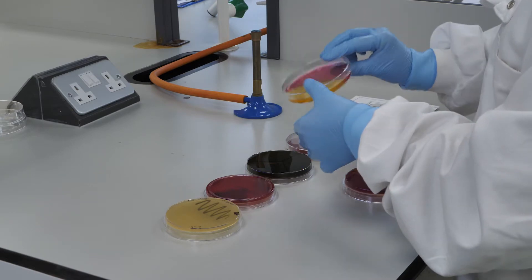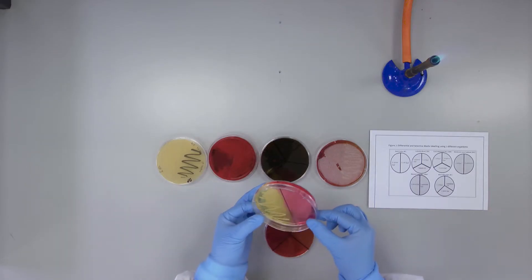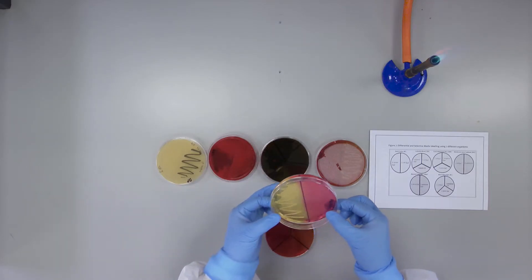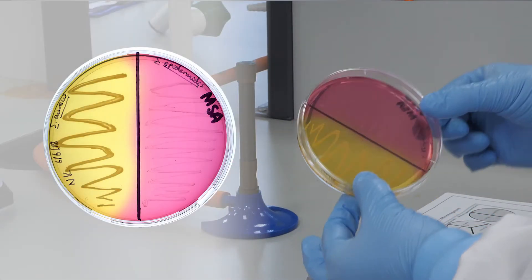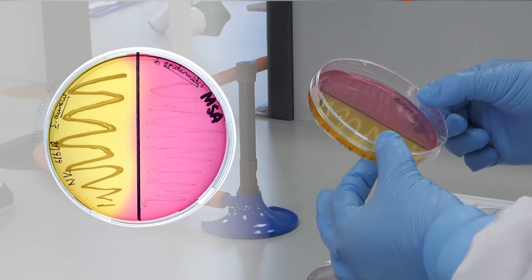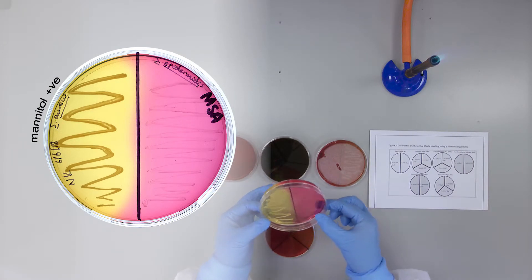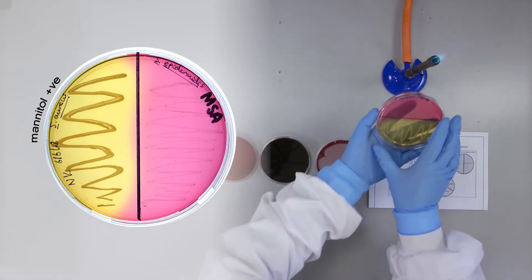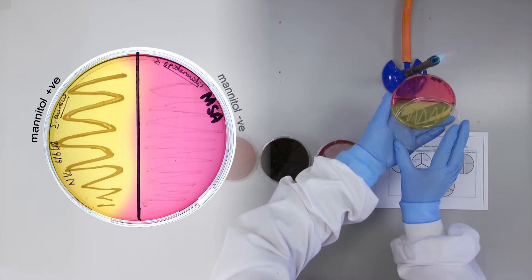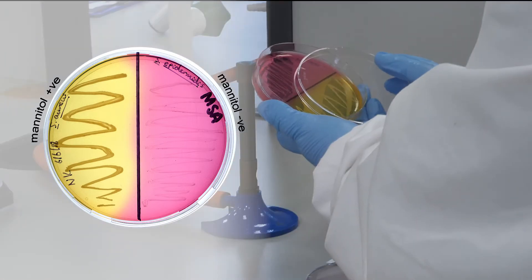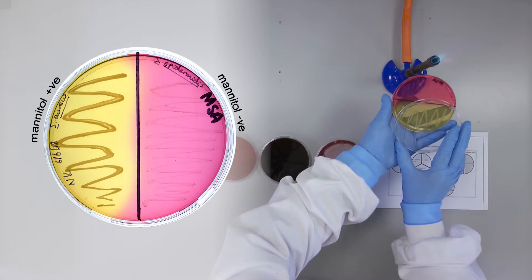Mannitol salt agar is selective for species of Staphylococcus due to high salt concentrations in the medium. A yellow colour change in the medium indicates mannitol breakdown. No colour change indicates the bacterium is mannitol negative.